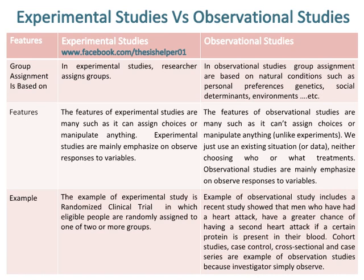Observational studies are mainly emphasised on observing responses to variables. An example of an experimental study is a randomised clinical trial, in which eligible people are randomly assigned to one of two or more groups. Examples of observational studies include a recent study showing that men who had a heart attack have a greater chance of a second if a certain protein is present in their blood. Cohort studies, case-control, cross-sectional, and case series are also examples because investigators simply observe.